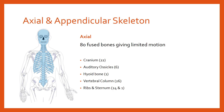The bones of the axial skeleton are for the most part fused, with very limited movement between them. Their primary function is not movement but protection: the cranium protects the brain, the vertebral column protects the central nervous system, and the ribs protect the lungs, heart, and other internal organs. Being fused provides good protection for these critical organs.